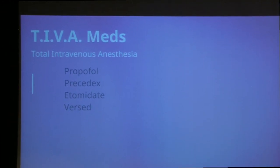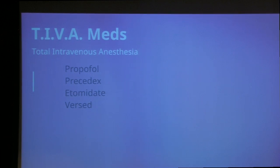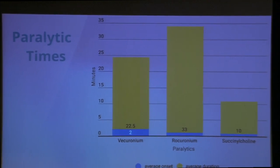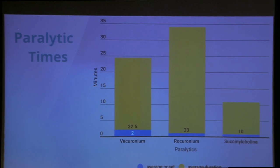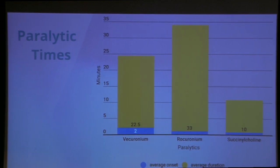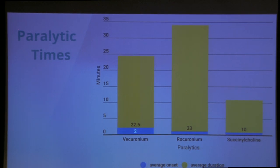They're moving more toward total IV anesthesia using propofol — also known as Diprivan, the drug Michael Jackson had issues with — along with Precedex, etomidate, and Versed. Most of those have reversals, and propofol comes off very quickly. For paralytics, in the trauma ICU we usually use succinylcholine because onset is very quick and if intubation fails, it wears off in about 10 minutes so the patient can breathe on their own. Rocuronium is used when we plan to paralyze a patient for days.